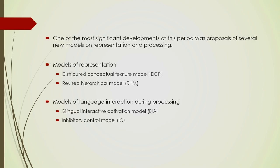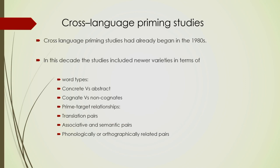New models were proposed in terms of both representation and language interaction during processing. Models of representation include the Distributed Conceptual Feature Model and the Revised Hierarchical Model, which we have discussed before. Models of language interaction during processing include the Bilingual Interactive Activation model and the Inhibitory Control model. Of these four important models, three have already been discussed. BIA deals primarily with comprehension, whereas the IC model deals primarily with bilingual language production.